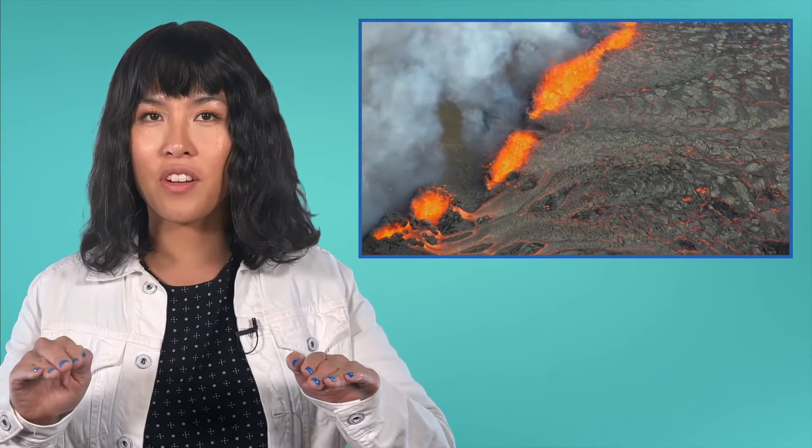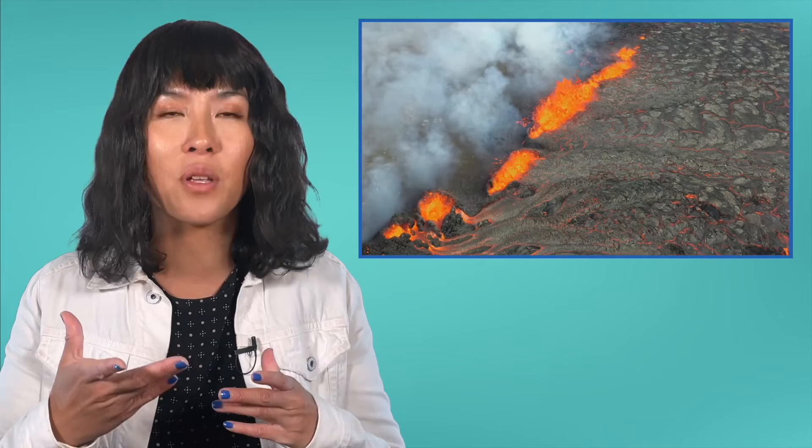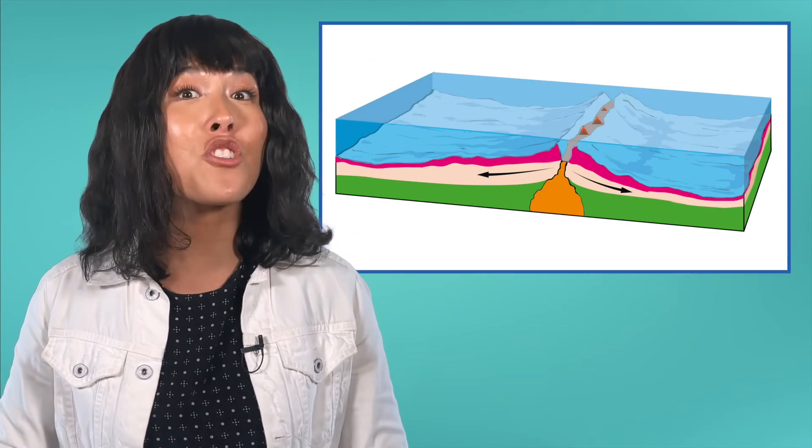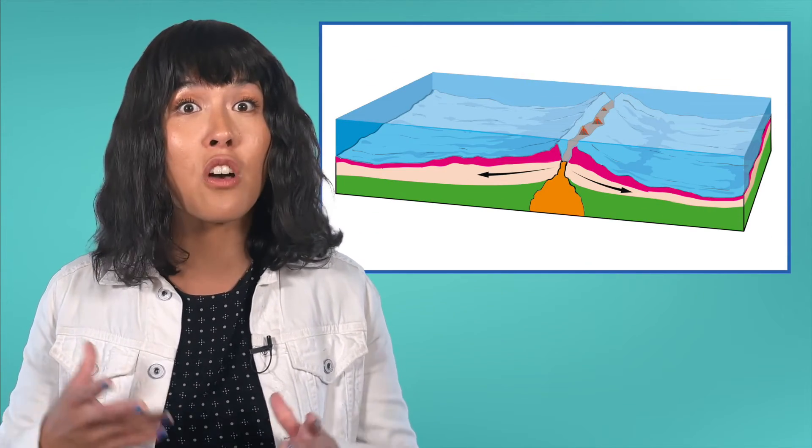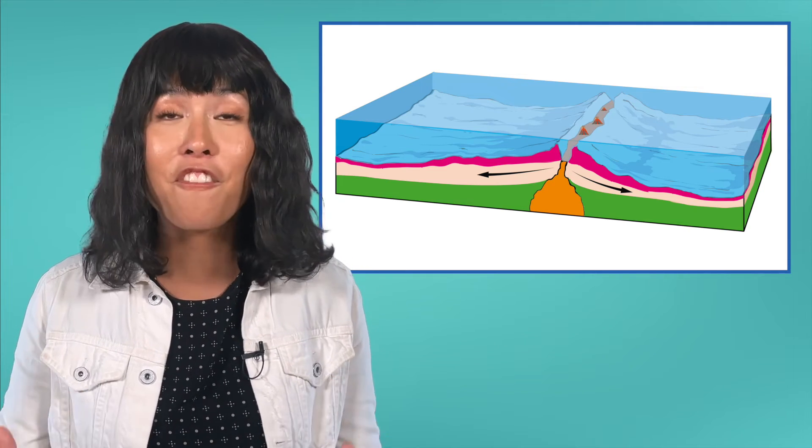As the two oceanic plates pull apart from each other, magma from the planet's mantle rises up to fill the empty space. When this magma cools and hardens into igneous rock, it bridges the gap between the plates. This creates new oceanic plates to replace the ones being melted down during subduction at convergent boundaries.